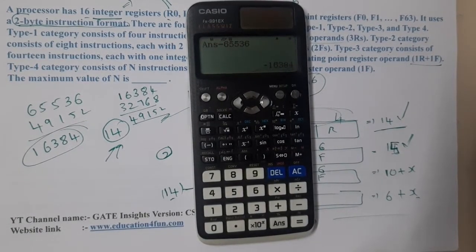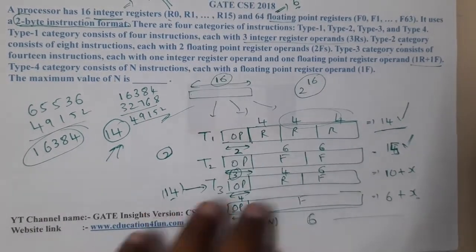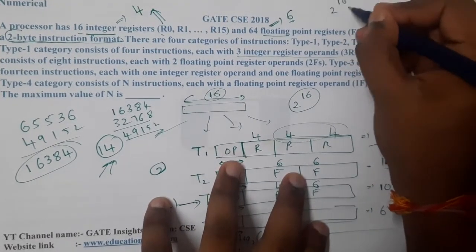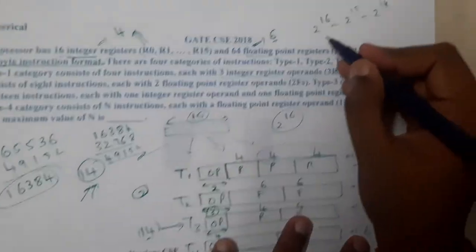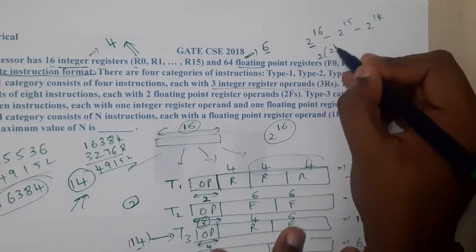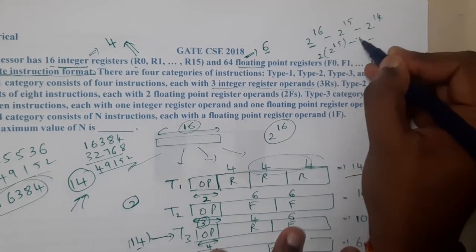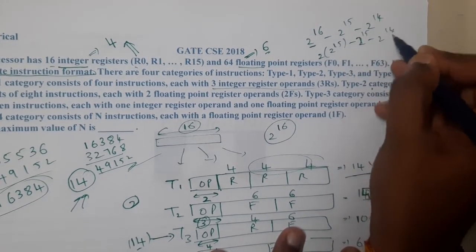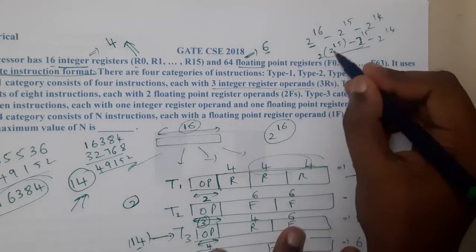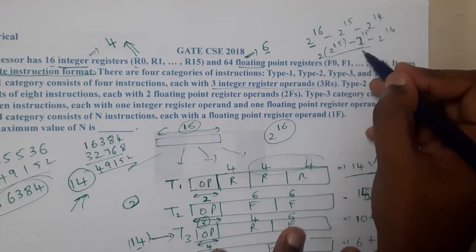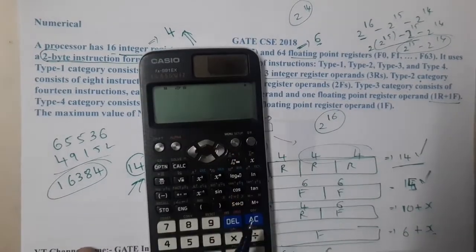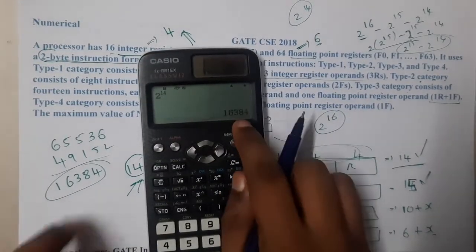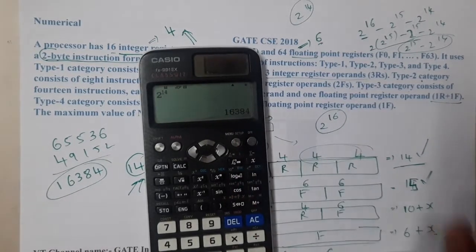Some students prefer a shortcut: 2^16 − 2^15 − 2^14. Factor out 2^15: that gives 2×2^15 − 2^15 − 2^14 = 2^15 − 2^14 = 2^14. Either way, the result is the same — 16,384 combinations remain after accounting for Type 1 and Type 2.